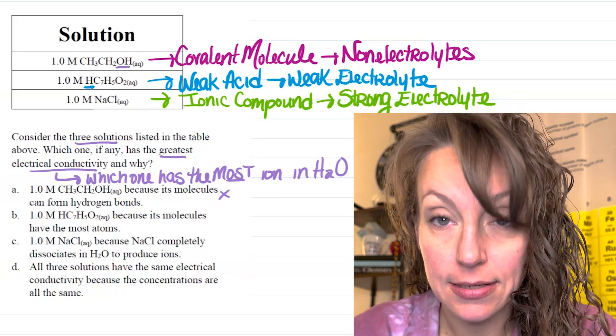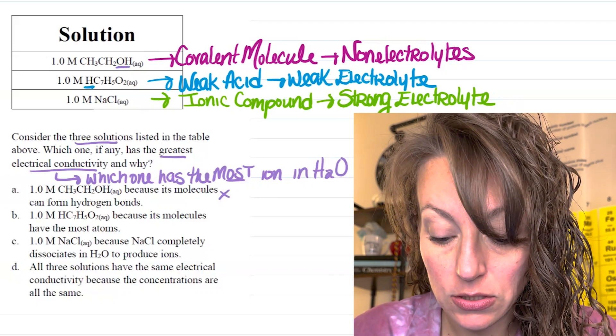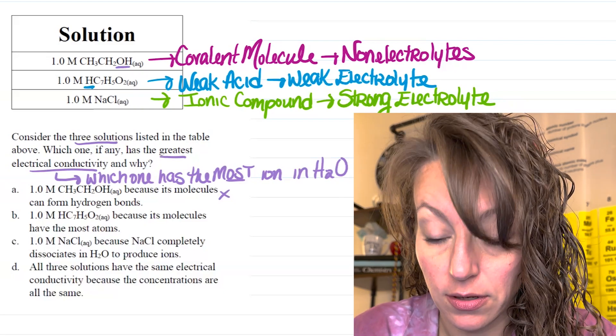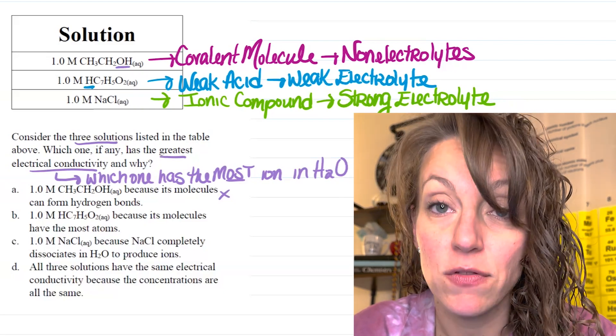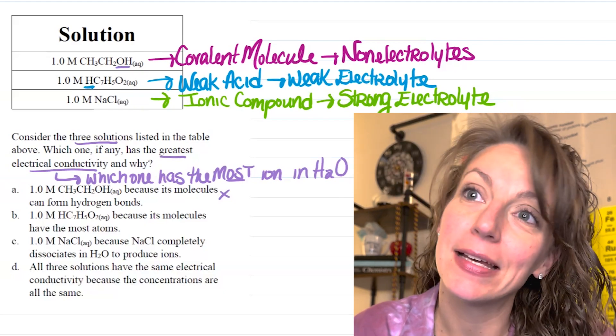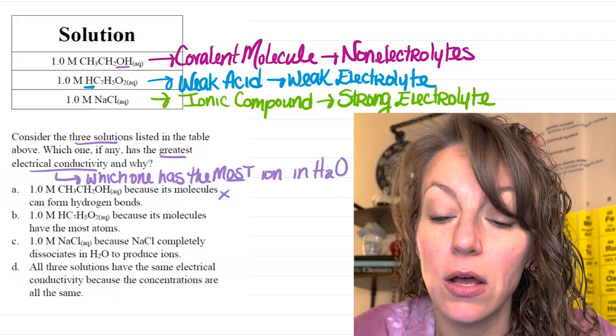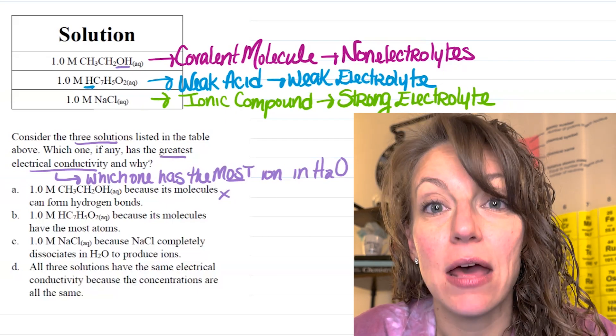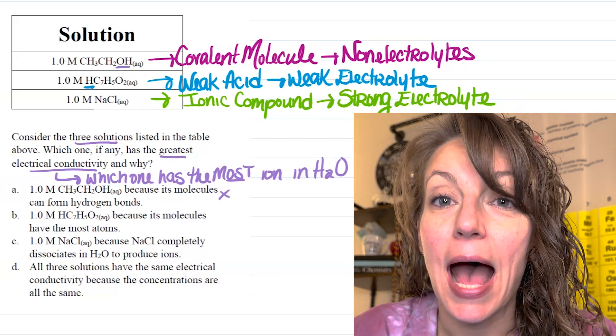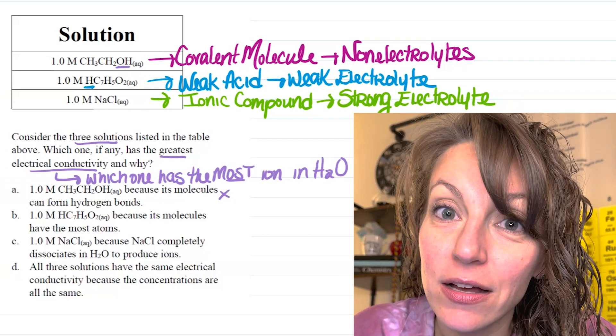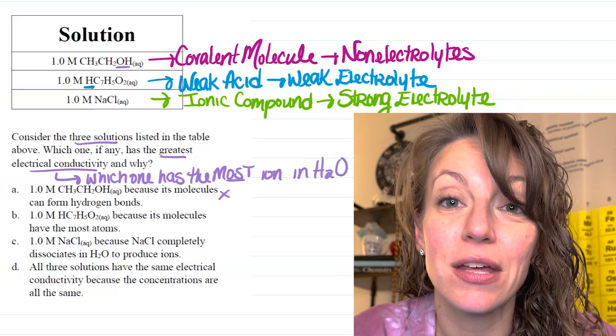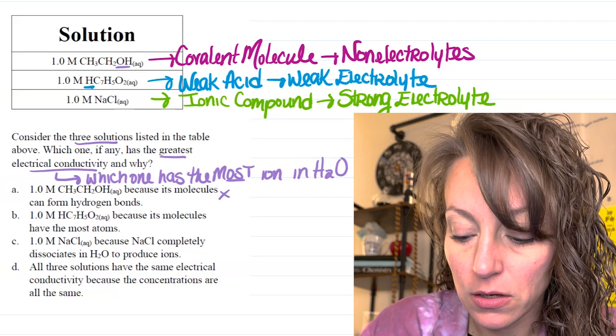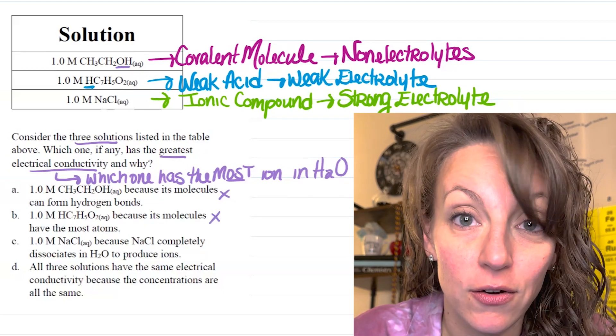Letter B states that 1.0 molar HC7H502 would have the greatest electrical conductivity because its molecules have the most atoms. Again, that's a true statement. That particular species has the most atoms out of all three species. However, it's the amount of ions formed when dissolved in water that's going to affect the electrical conductivity. So, again, that's not a great option.